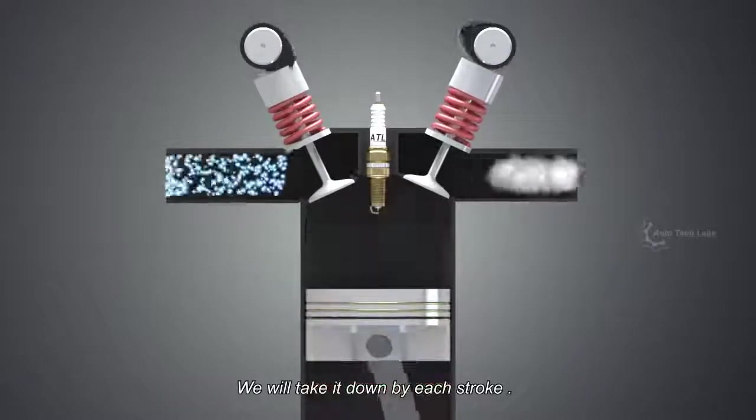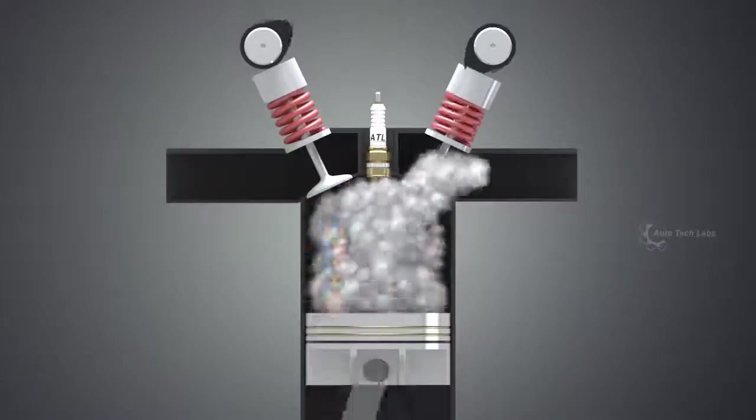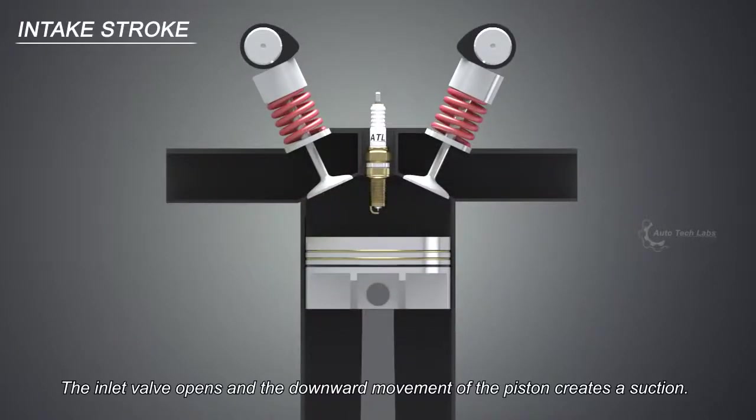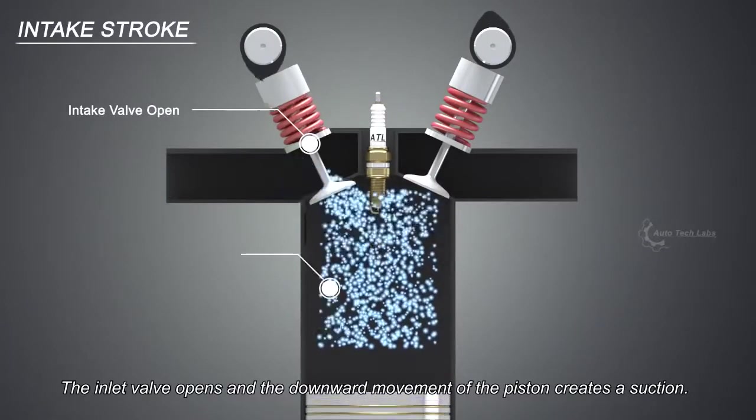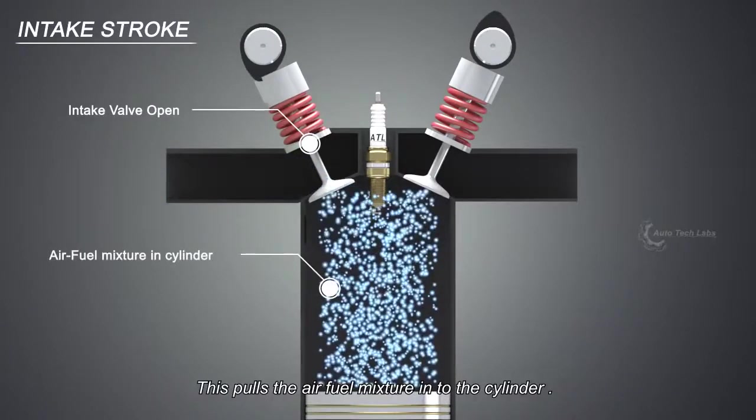We will take it down by each stroke. The intake stroke: the inlet valve opens and the downward movement of the piston creates a suction. This pulls the air-fuel mixture into the cylinder.